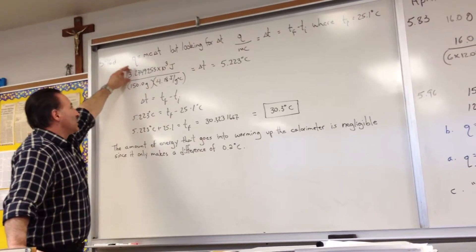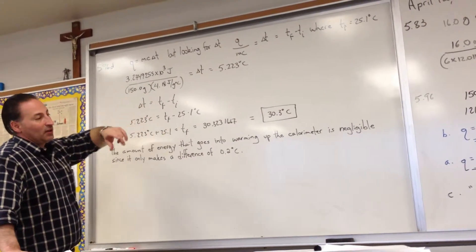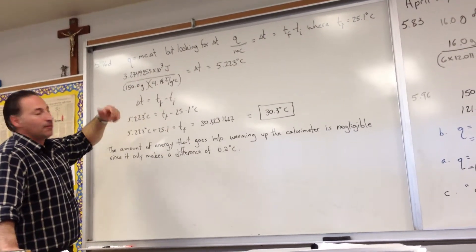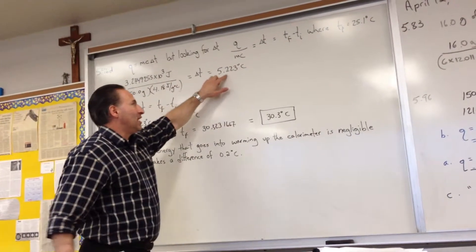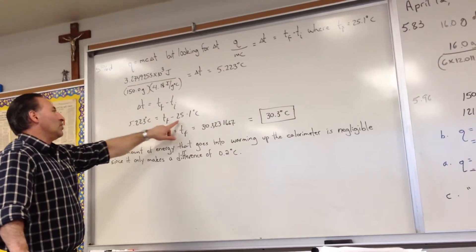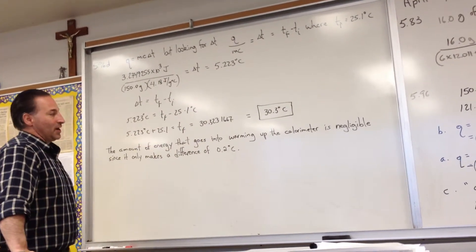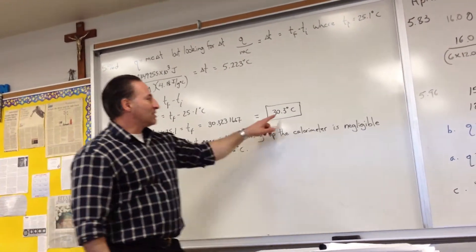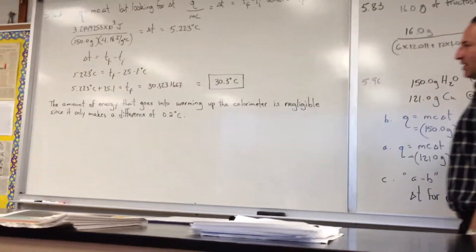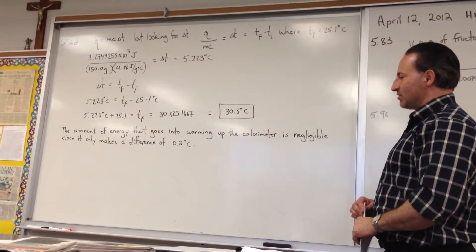In the original experiment, some of the copper's energy warmed the water and only 140 joules went into warming the calorimeter. Now we assume all the energy goes into the water. The result is a ΔT of 5.223 degrees. Since ΔT equals T_final minus T_initial, and the initial temperature is 25.1 degrees Celsius, we solve for T_final and get 30.3 degrees Celsius. So it only makes a difference of 0.2 degrees — the energy absorbed by the calorimeter is negligible.